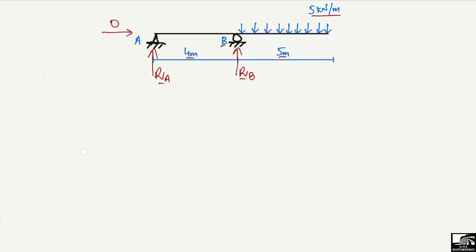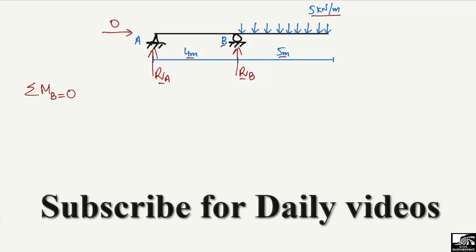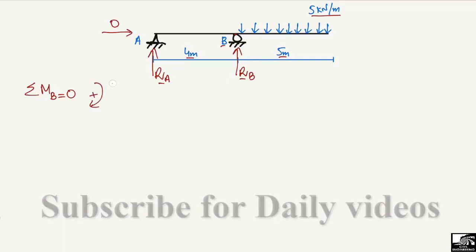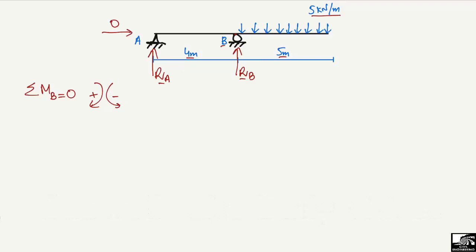Now to find out RA and RB, let's take the equilibrium equation and suppose the moment at any point equal to zero. Here I'm taking the summation of moment at point B equal to zero. I assume that clockwise moment is taken as positive and anti-clockwise is negative — this is our sign assumption, you can change it according to your wish.